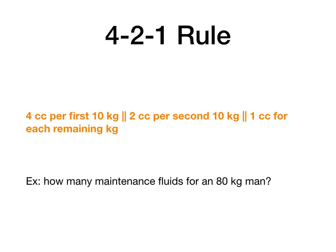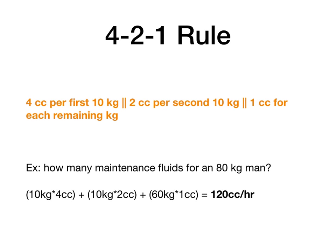In the diagram, there is the 4-2-1 rule. Let's say we have an 80 kilogram man — how many cc's per hour do they need? For the first 10 kilograms they get 4, for the second 10 kilograms they get 2, and for every kilogram thereafter they get 1. So: 10×4 = 40, 10×2 = 20, and the remaining 60 kg × 1 = 60. Add it all up and we get 120 cc's per hour as our maintenance fluid calculation. Attendings and residents will ask this, and if you can answer it, that's bonus points.